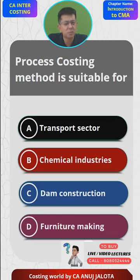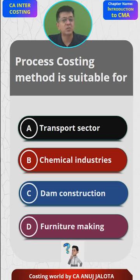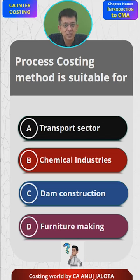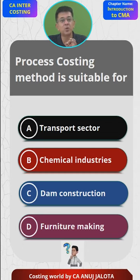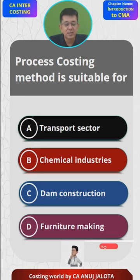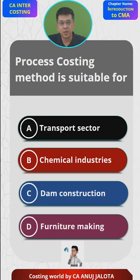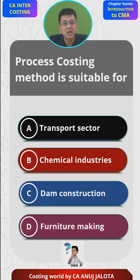For furniture making, every piece of furniture made will usually be different, so you will have something called job costing. Job costing is applied where every unit you make is different for each and every customer — there are no standardized products. Process costing is applicable where a company is in manufacturing.